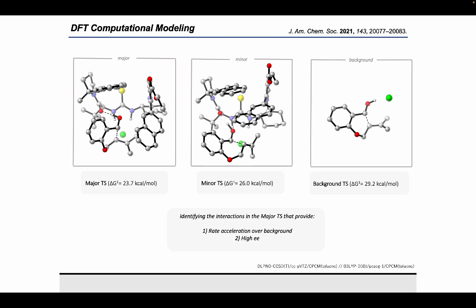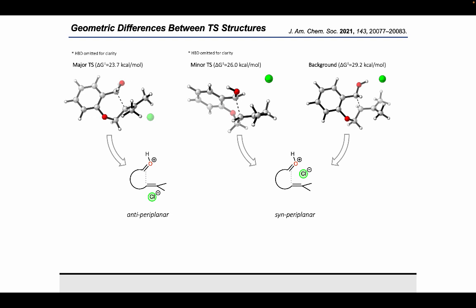At this point we are really interested in understanding specifically what it is about, in particular, the major transition state that allows for rate acceleration over the background as well as high levels of enantioselectivity. Specifically thinking about the delta delta G double dagger between these three structures. In the paper we have a pretty extensive discussion of what we think is going on, and today I'll just tell you about my favorite conclusion from those studies that has to do with oriented electric fields.